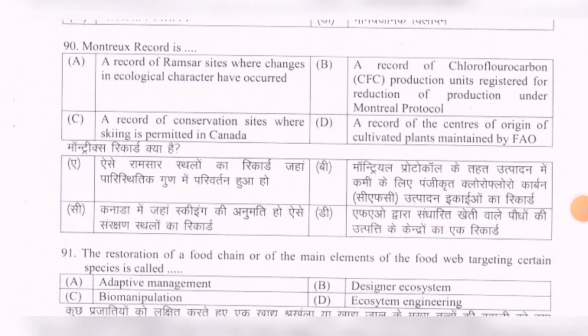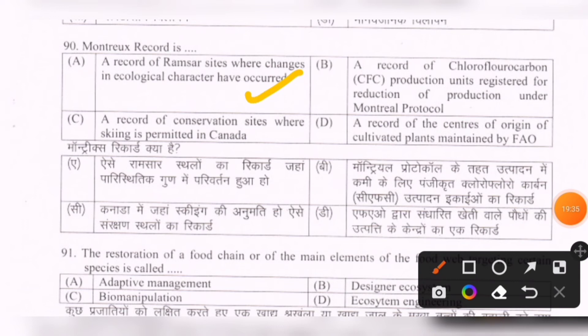Next question: Montreux Record is — options are: a record of Ramsar sites where changes in ecological character have occurred; a record of chlorofluorocarbon (CFC) production units registered for reduction under the Montreal Protocol; a record of conservation sites where skiing is permitted in Canada; a record of centers of origin of cultivated plants maintained by FAO. The correct option is the first one — a record of Ramsar sites where changes in ecological character have occurred.